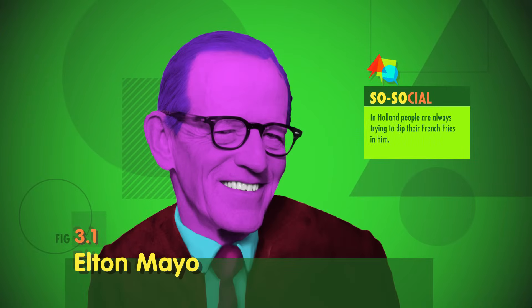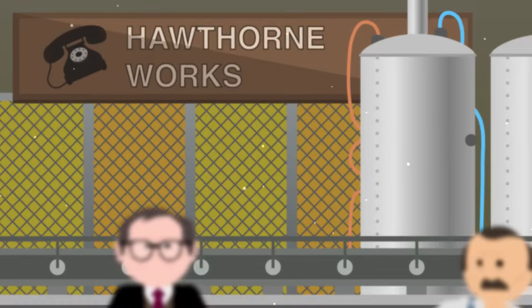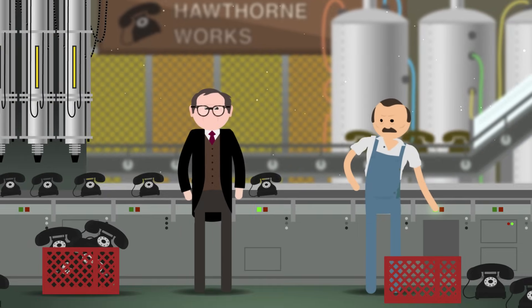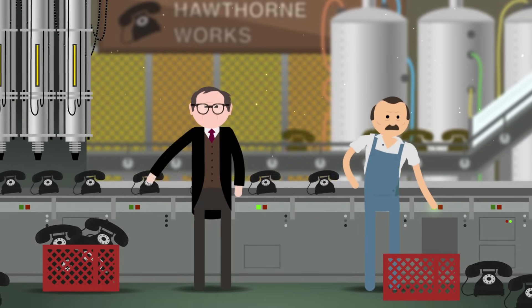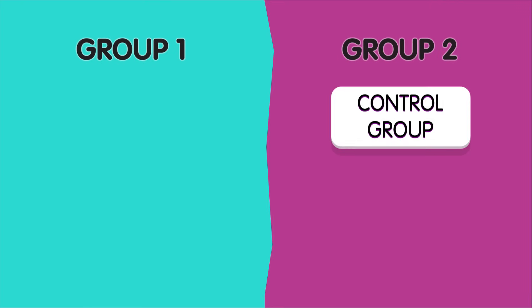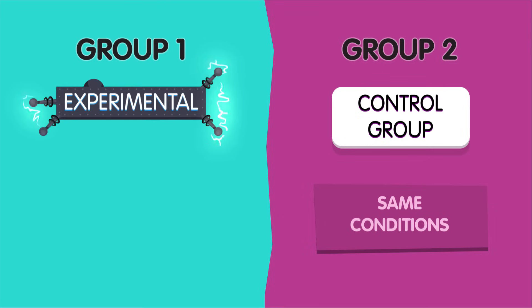For a really fun and fascinating example of this, let's go to the Thought Bubble. In the late 1920s, Austrian sociologist Elton Mayo went to a telephone factory known as the Hawthorne Works in Cicero, Illinois. His goal was to help the Western Electric Company figure out how to make its workers more productive. So Mayo split the factory staff into a control group — who kept working under the same conditions as always — and an experimental group.